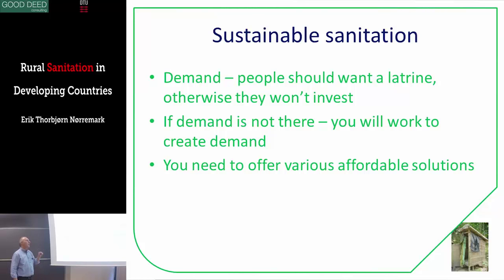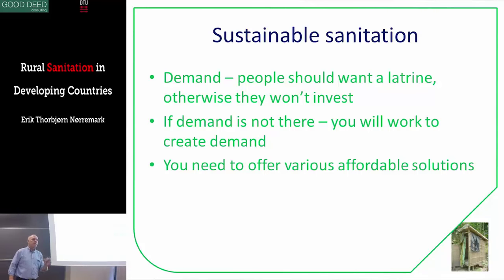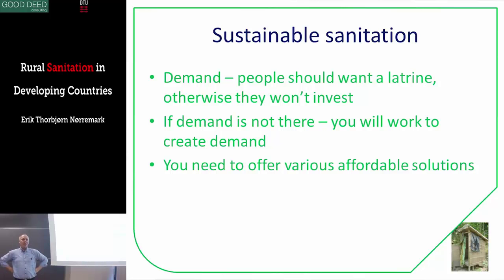If the demand is not there yet, you will work to create it. Then you need to offer various affordable solutions — you need to present several models from very low cost to medium-low cost to low cost. When I make projects, I used to have at least five models so people can choose. How do you create demand? You build demonstration latrines — five different models — that are so nice and the price is so low that people say, 'I didn't know I could get a latrine this cheap.' And then people choose the model they can afford.